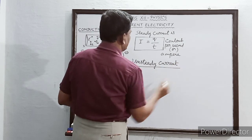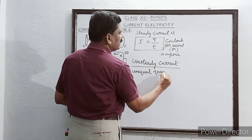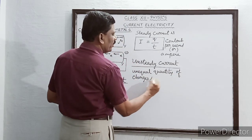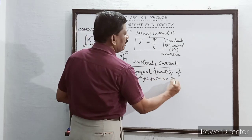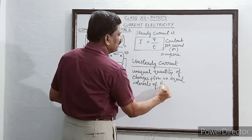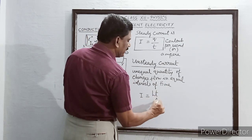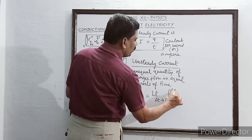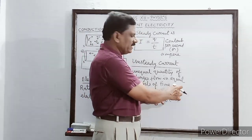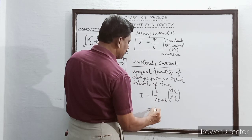When is the flow of current said to be unsteady? When unequal quantities of charges flow in equal intervals of time, the current is unsteady. This unsteady current is denoted by I = limit as ΔT tends to zero of ΔQ/ΔT — the quantity of charge flowing divided by the proportionate interval of time. This can also be written as dQ/dT, so I = dQ/dT.